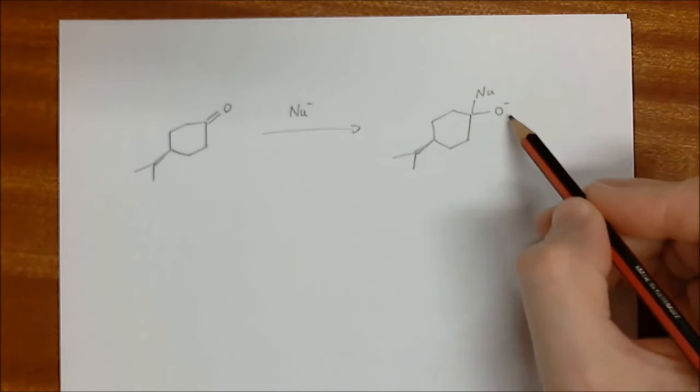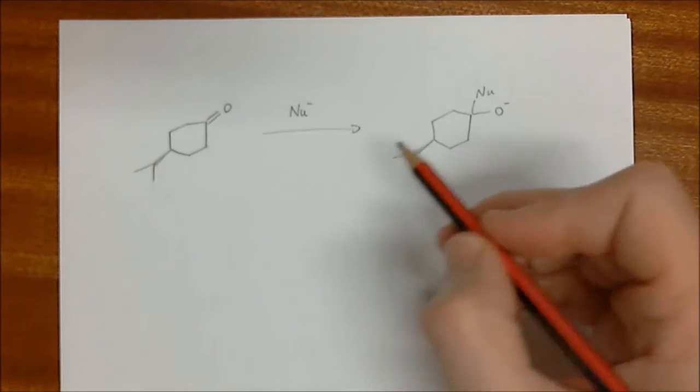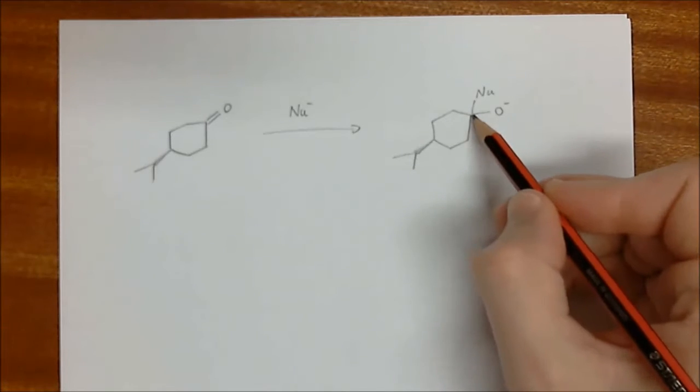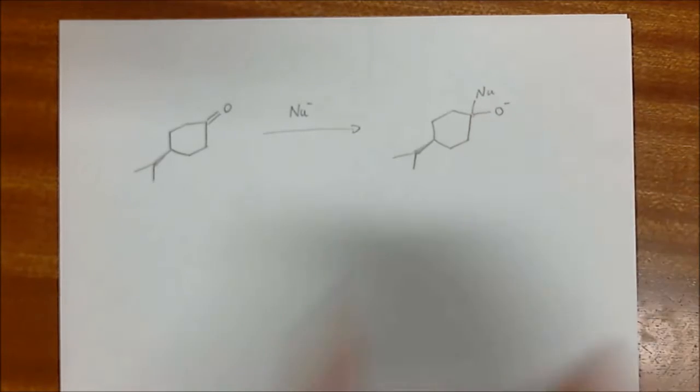So O- initially, when we work this up with water, it'll end up being an OH. The key thing here is that we're actually forming a new stereogenic center. It's not a chiral center because, or center of chirality, because we're not making enantiomers, but it's a stereogenic center.